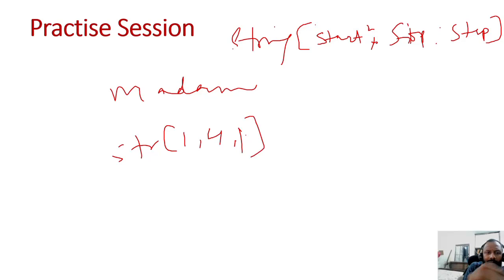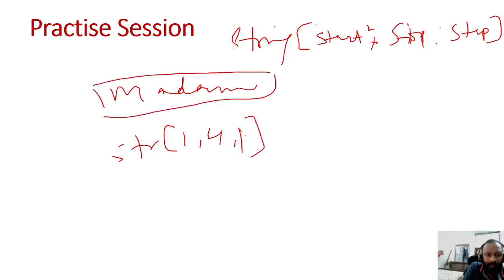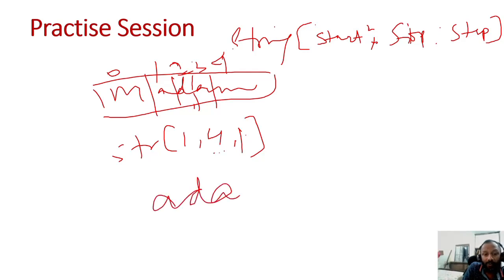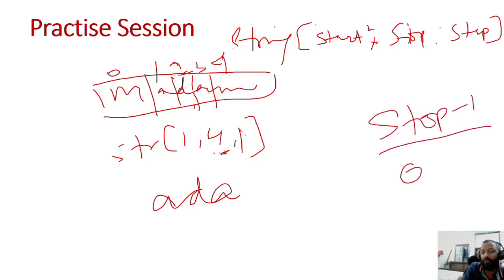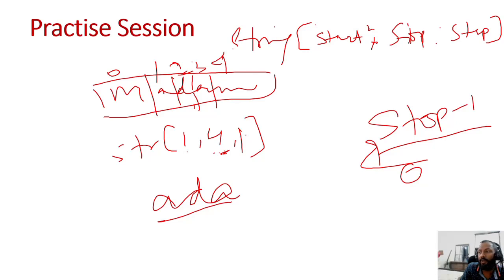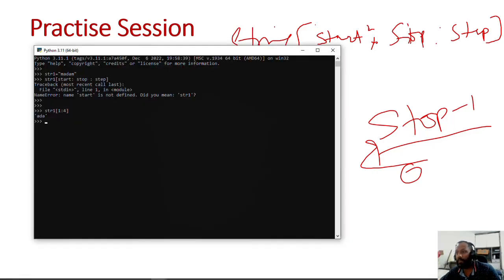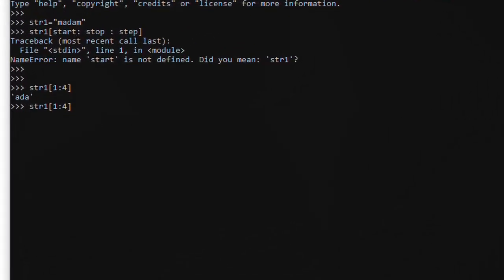Arrays की बात करें तो arrays में यह ऐसे काम करता है: this is zero, this is one, this is two, this is three, this is four. तो हमने बोला 1 से 4 निकालो तो उसने a निकाला, d निकाला, a निकाला। यह stop minus one काम करेगा - हम जो भी stop बता रहे हैं वो stop में minus one करके काम करेगा, because it is starting from zero. तो zero से stop-minus-one तक काम करता है। I hope this is making sense.